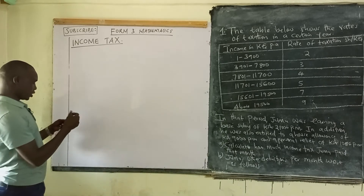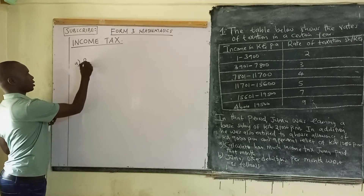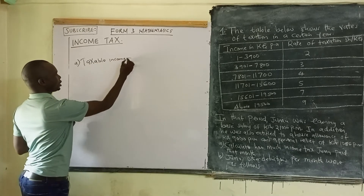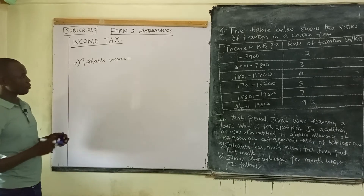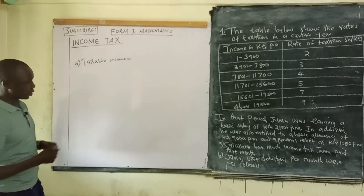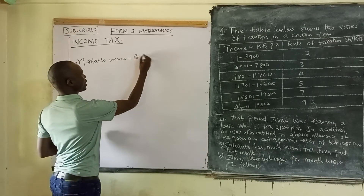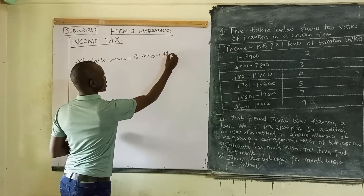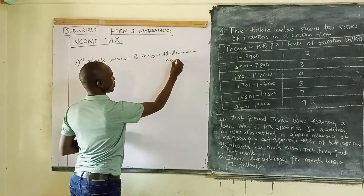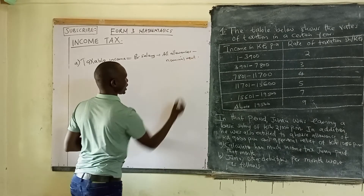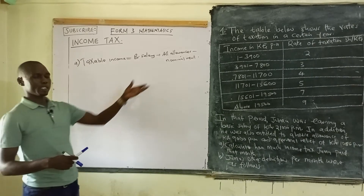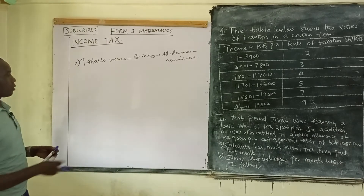The first terminology is taxable income. Taxable income is the total amount of money that the government uses to calculate tax. To arrive at taxable income, you take the basic salary, add all the allowances given, then minus what we call nominal rent. Sometimes they call it the rent page. Nominal rent applies to those people who are given free houses, for which they have to pay some amount towards maintenance of those houses.